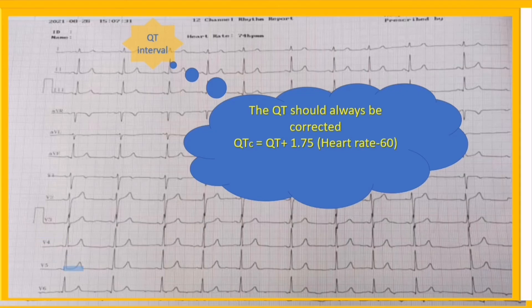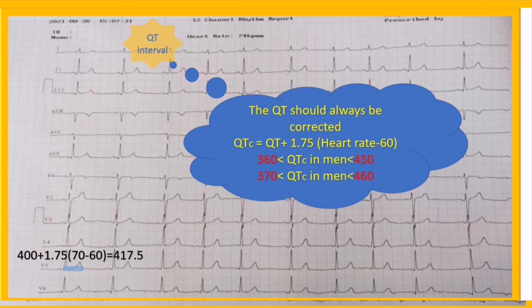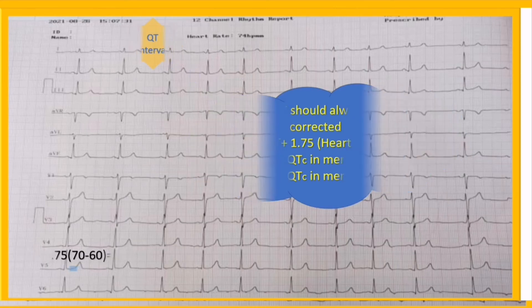We must correct the QT using Hodges formula, and finally the corrected QT of our strip becomes approximately 417.5 milliseconds. Note that the normal range of QT is 360 to 450 milliseconds for men and 370 to 460 milliseconds for women.